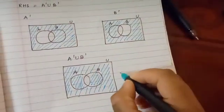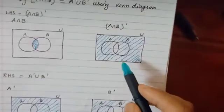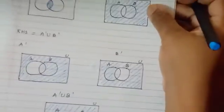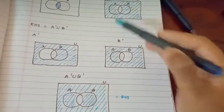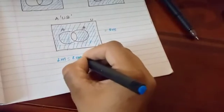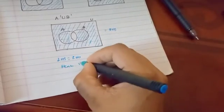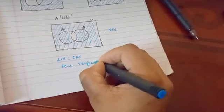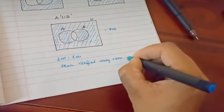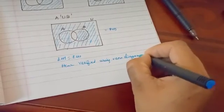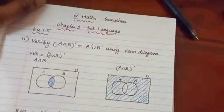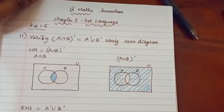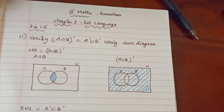So this LHS equals RHS - this middle part and all are shaded the same. Therefore LHS is equal to RHS, hence verified using Venn diagram. So very easily, if you neatly draw the Venn diagrams, you can verify this. Thank you students, please like and subscribe to my channel.